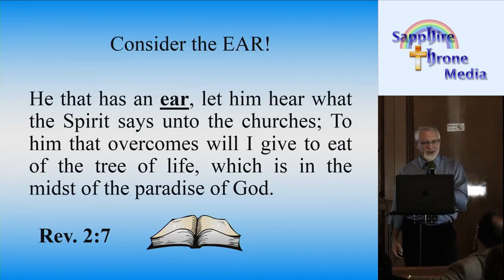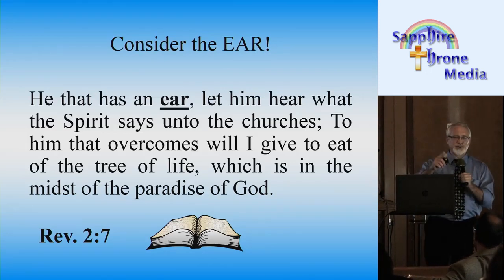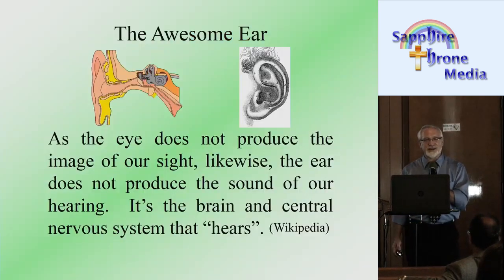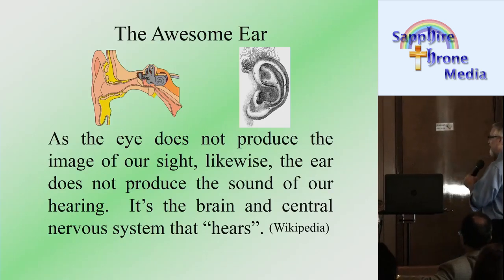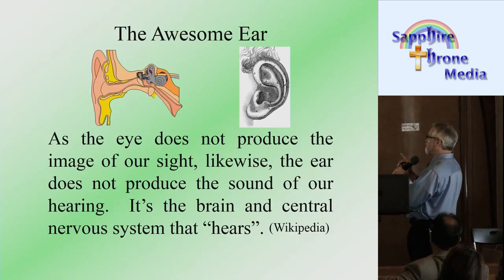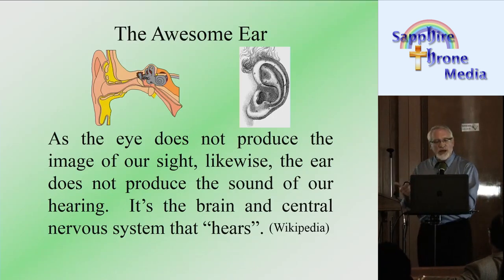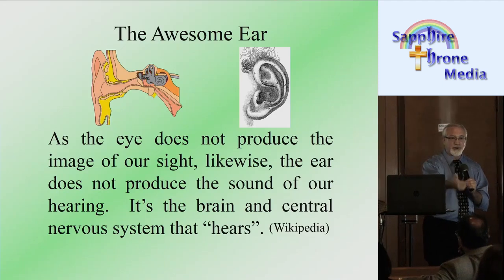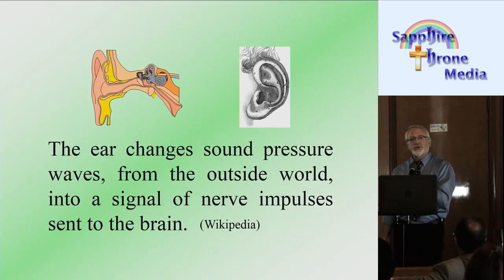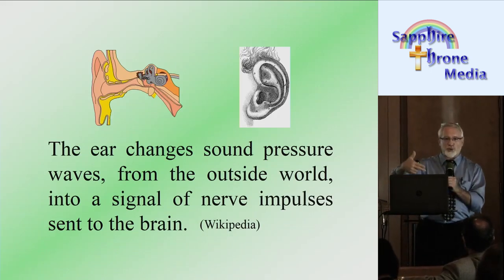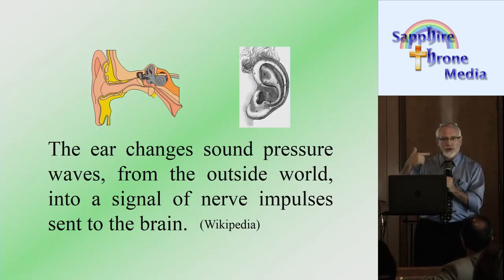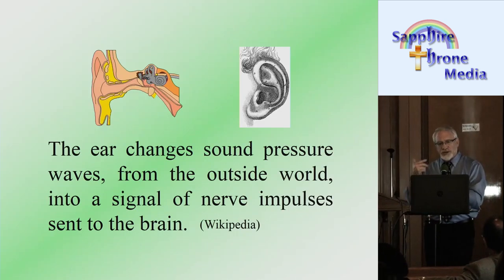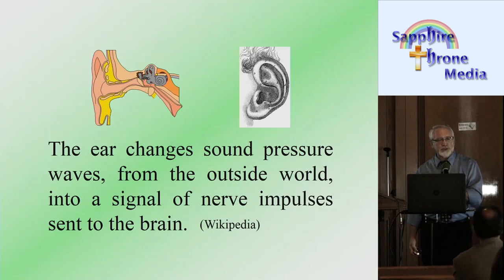Now let's consider the ear. The ear is also an awesome creation of God. As the eye does not produce the image of our sight, likewise the ear does not produce the sound of our hearing — it's the brain and central nervous system that actually does the hearing. The ear changes sound pressure waves into signal or nerve impulses that are sent to the brain.